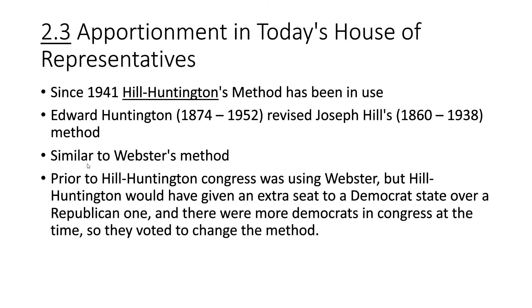It's similar to Webster's method. Before Hill-Huntington's method was adopted by Congress, they were using Webster's method, but at the time Hill-Huntington would have given an extra seat to a Democrat state over a Republican one. Since there were more Democrats in Congress at the time, they voted to change the method to Hill-Huntington's, which benefited them. There is more about that in your textbook in section 2.3.